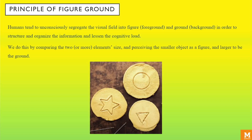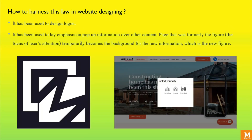This principle asserts that we tend to unconsciously segregate the visual field into figure and ground — that is, the foreground and the background — in order to structure and organize the information. The foreground entails elements of the page that attract our primary attention, and the background is everything else. We do this by comparing the size of two or more elements and perceiving the smaller object as the figure and the larger as the ground. For example, in the design given below, our eyes instantly see the shape — a circle, a star, or a triangle — sitting on a brown background. This principle has also been used to design a variety of logos; for example, in the first image, we instantly differentiate between the background and the foreground and perceive the letter M.